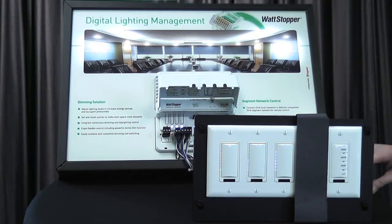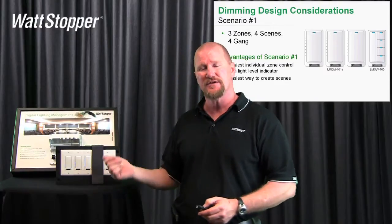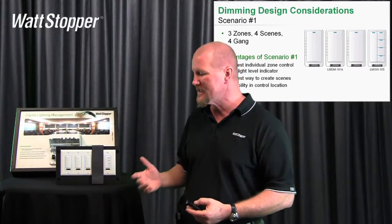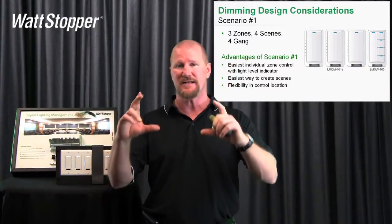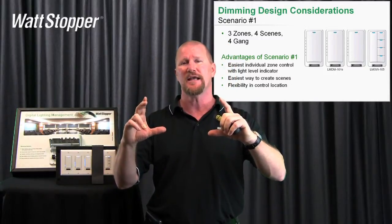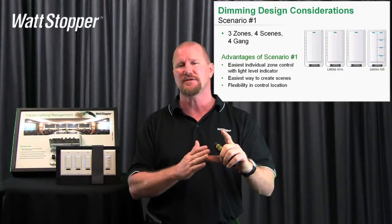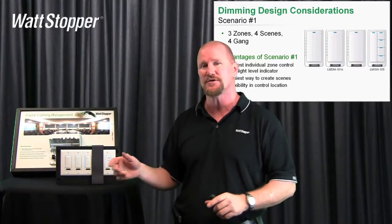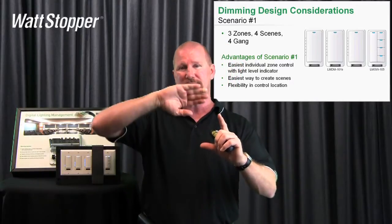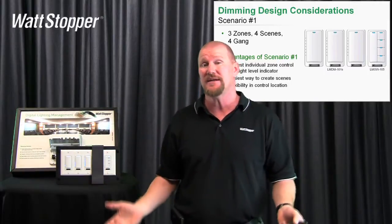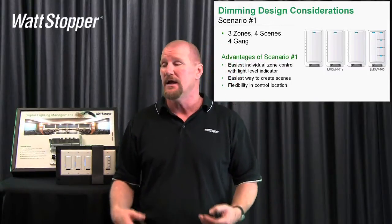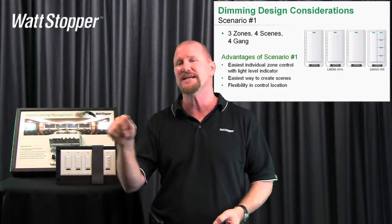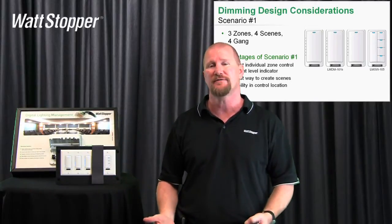That's why I say it's the easiest way to set scenes. It offers easiest individual zone control with light level indication and flexibility in control location. Some competitors make four-gang dimming systems handling up to eight loads, but to access individual zone control you have to flip up a cover — and it's not very often that someone actually does that.